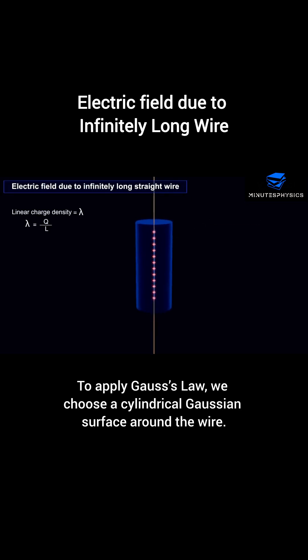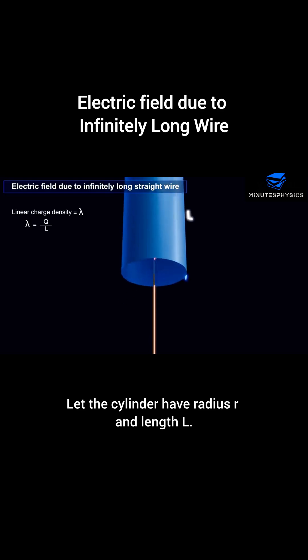To apply Gauss's law, we choose a cylindrical Gaussian surface around the wire. Let the cylinder have radius r and length l.